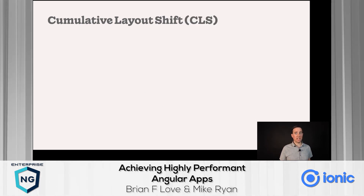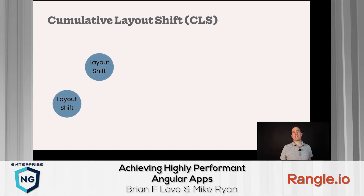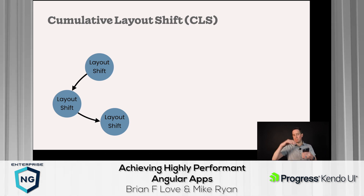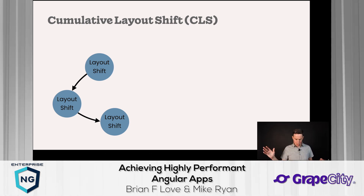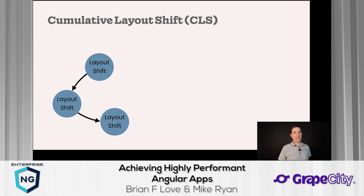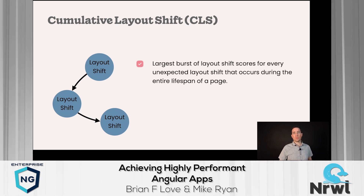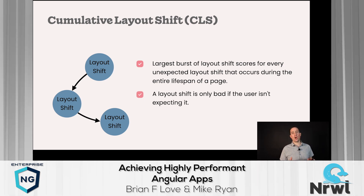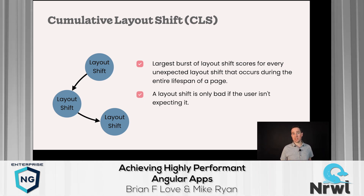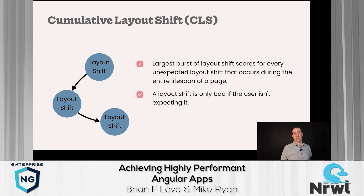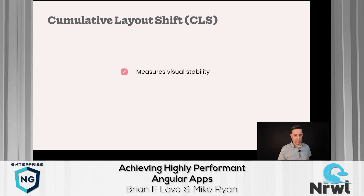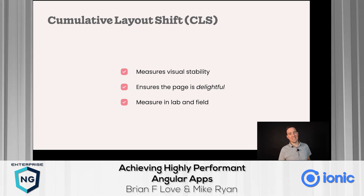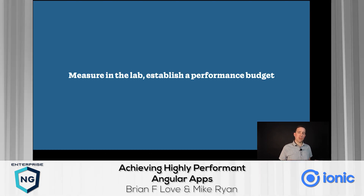Cumulative Layout Shift, or CLS — have you ever been on a news website, started reading an article, and then a banner ad shows up and pushes the article all the way down? That jarring experience is a layout shift. CLS measures all unexpected layout shifts that occur during the entire lifespan of our web app. A layout shift isn't always bad — infinite scroll can cause them — but it's bad when the user isn't expecting it. CLS measures visual stability and ensures the page is delightful. We measure it both in the lab and in the field.